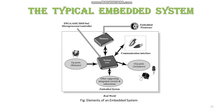We know that an embedded system is a combination of both software and hardware to do a specific task or group of tasks within the given time. For example, a watch is a time displaying system. Its components follow a set of rules to show the time. If one of its parts fails, the watch will stop working. So we can say that in a system, all its sub-components depend on each other.